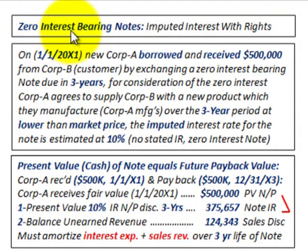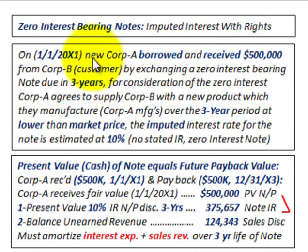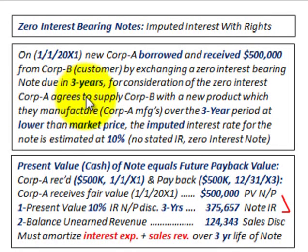What we're going to be looking at here is a zero interest bearing note with imputed interest and with rights. For example, on 1-1-20X1, Corporation A borrows and receives $500,000 in cash from Corporation B, one of their customers, by exchanging a zero interest bearing note due in three years. Corporation A is the manufacturer and they're supplying the product to Corporation B.